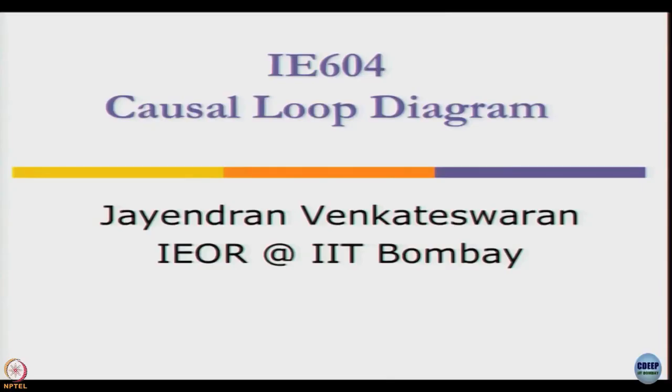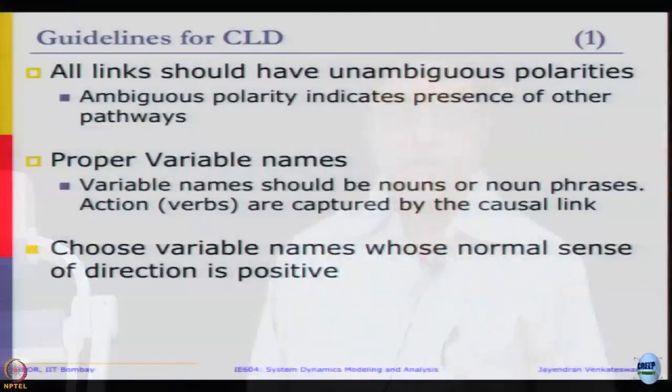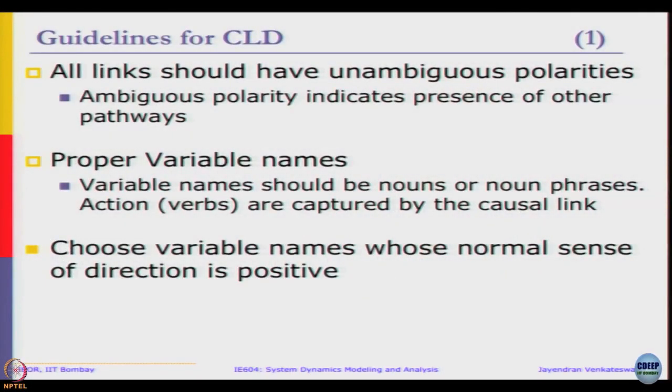We will continue looking at causal loop diagrams. We introduced what a causal link is, identifying variables, and started looking at some of the guidelines. We looked at the requirement that variables must be nouns or noun phrases, unambiguous polarities, as well as choosing variable names whose normal sense is positive. These are three guidelines we saw, and there are a few more guidelines which will also be illustrated through examples like we did yesterday.